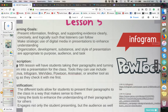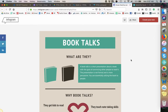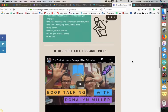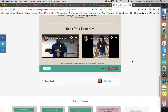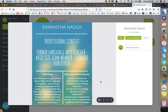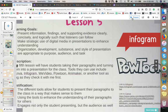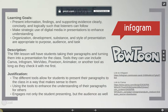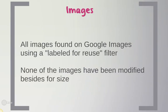I have a couple of examples. This could be an infographic — like a longer version of a poster, kind of interactive. And then students can make a poster or something else using Canva, like I did right here. They are really simple and easy to use — I think it would be a great choice for a presentation. These are my image credits. All images were found on Google Images using a labeled-for-reuse filter, and none of the images have been modified besides size.